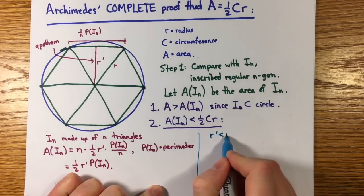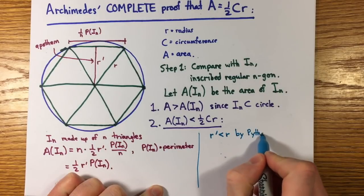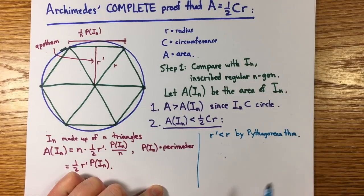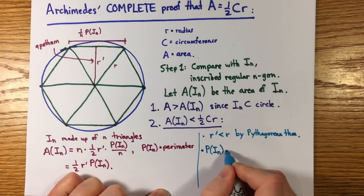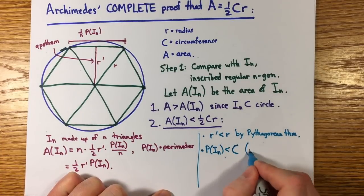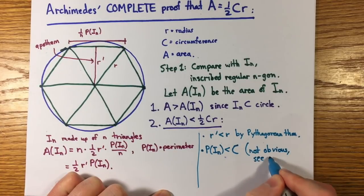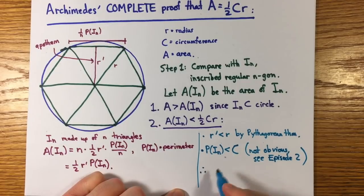Now the apothem r prime is less than r, by the Pythagorean theorem, and the perimeter of the inscribed polygon is less than the circumference. This is not obvious. It was also proved by Archimedes, and it was something I discussed in episode two of this series. Check that out for a proof. With those inequalities, we get A of i n is less than one half cr.